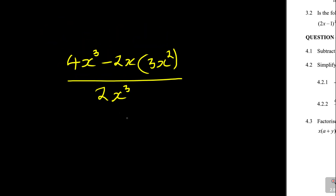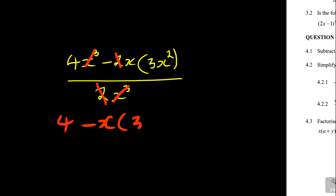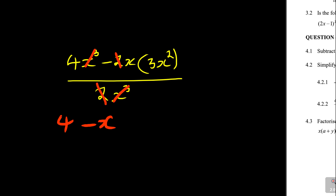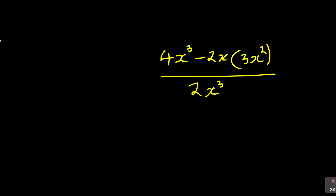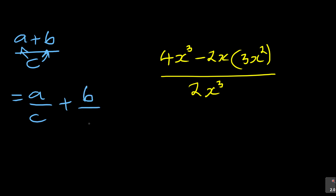Very important concept here - be very careful. Don't start cancelling things like this goes with that, this goes with that. Saying 4 minus x times 3x squared is a very dangerous, suicidal attempt - don't do acrobatics in maths. The concept is: if I say (a + b) over c, the c affects both a and b, so it's a over c plus b over c.